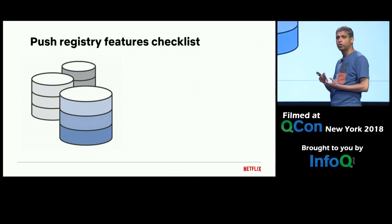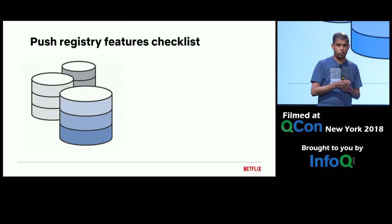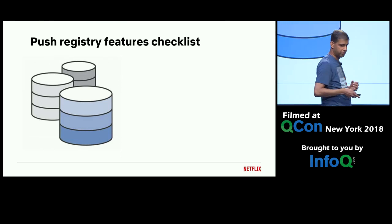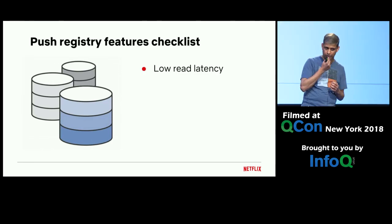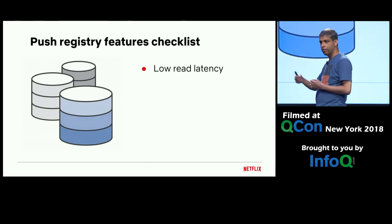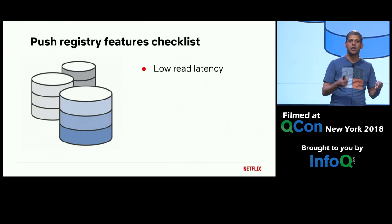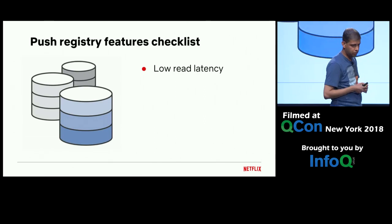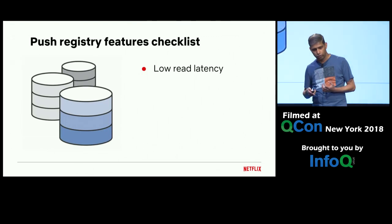You can use any data store of your choice as a push registry, but that data store should have the following characteristics for best results. It should have low read latency, and this is important because you only write a record into the push registry once for every client when it first connects, but you look it up or read it multiple times — every single time someone is trying to send a message for that client. So low read latency is important. You can somewhat compromise on write latency if you have to.